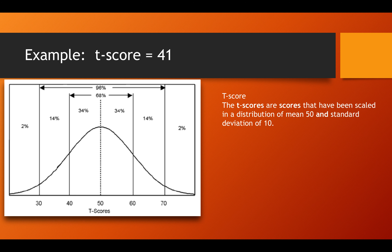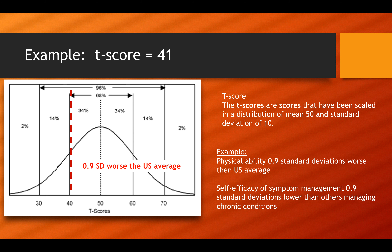Let's use a normal distribution as an example. If we had a T-score of 41 that's normally distributed, our patient's score would be 0.9 standard deviations worse than the US average. Using this approach, we could enter in the patient's chart for physical function: our patient's physical ability is 0.9 standard deviations worse than the US average. Or for self-efficacy, we could write: our patient's self-efficacy of symptom management is 0.9 standard deviations lower than others managing chronic conditions.